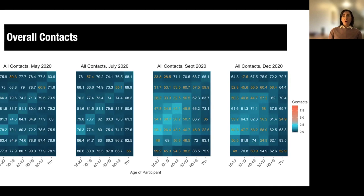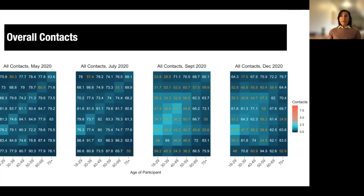Before the Alpha variant became dominant in Canada, we also estimated R values based on a theoretical increase in transmissibility due to the emergence of the Alpha or B.1.1.7 variant. Each of the scaled estimates of R were multiplied by a factor of 1.56 to provide a distribution of R estimates consistent with the transmissibility of the Alpha variant. Here are the four contact matrices for each of the survey time points. In the figure, the x-axis represents participant age group and the y-axis represents the contact age group, showing the average total number of daily reported contacts between age groups, with lighter color tiles indicating more contacts.